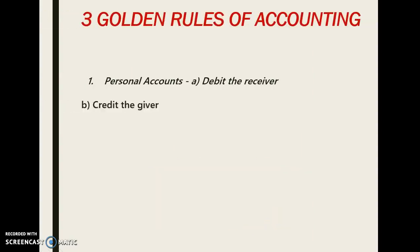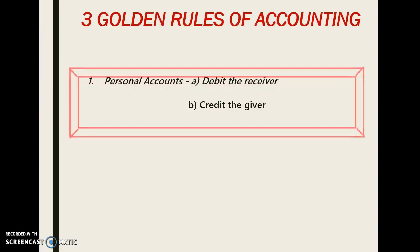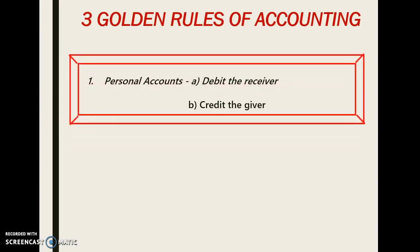As per the first golden rule of accounting, in case of personal account: debit the receiver and credit the giver. That is, when a person receives something, that person's account will be debited in the books of account, and when a person gives something, we will credit that person's account.